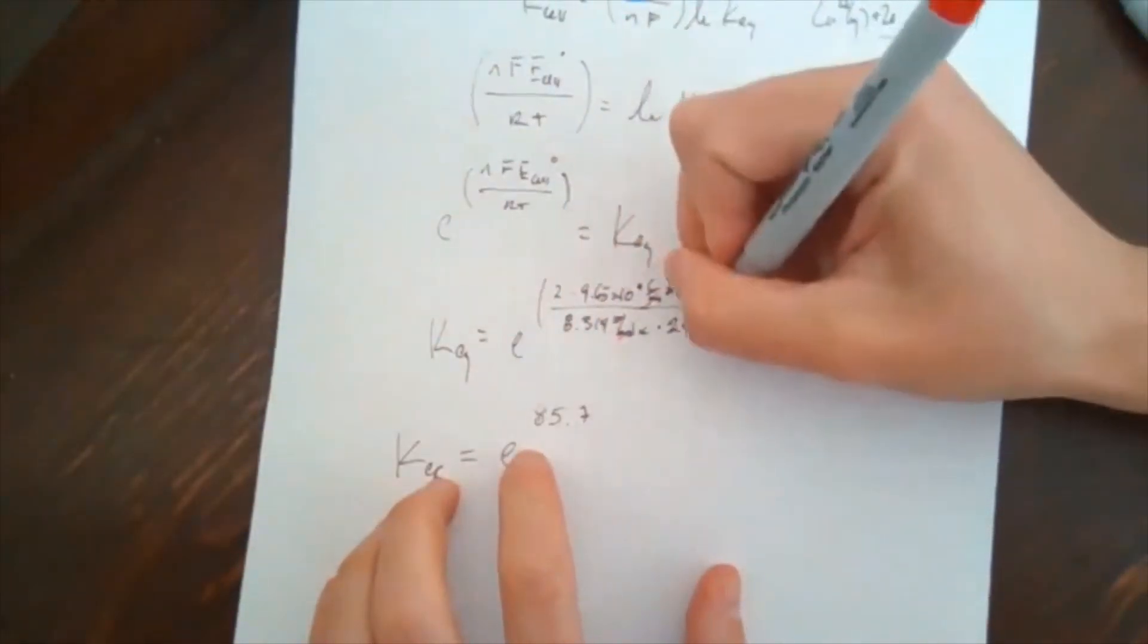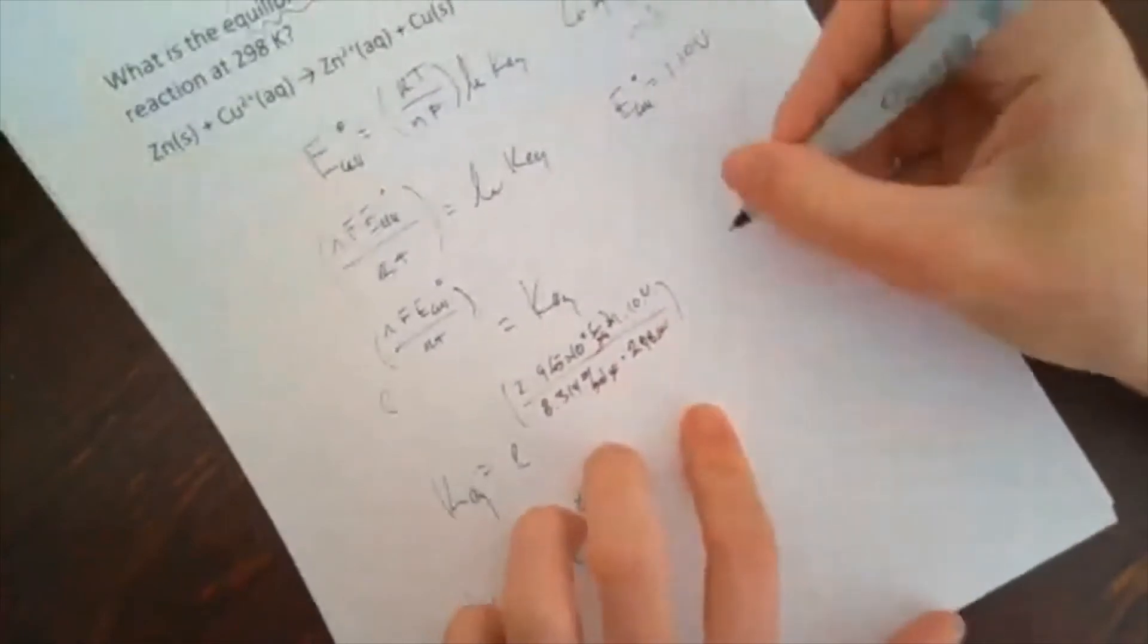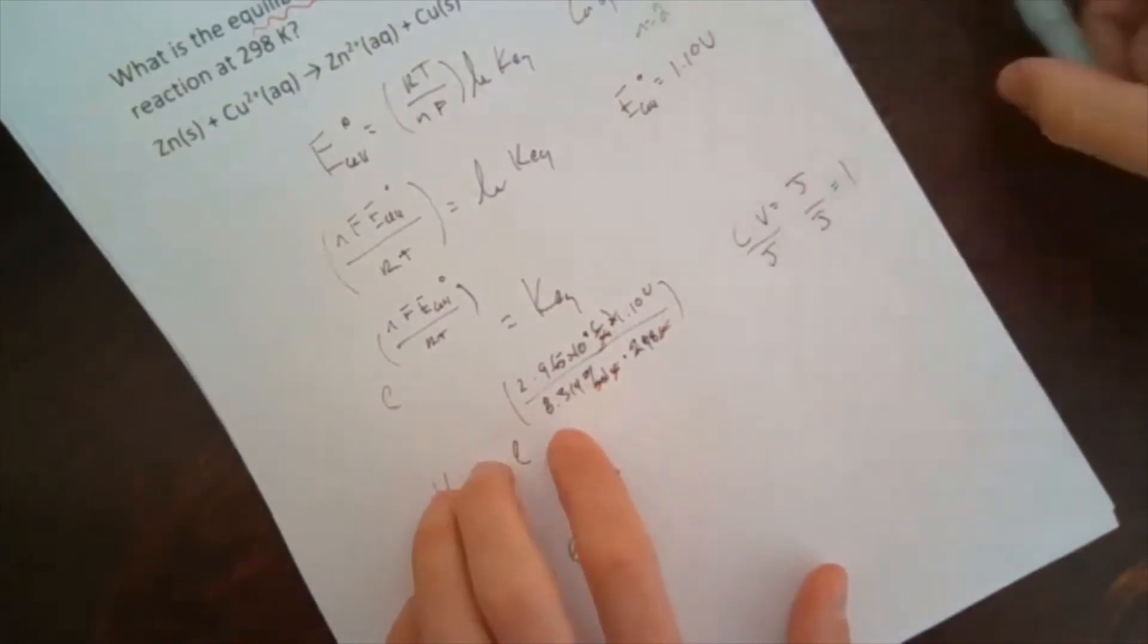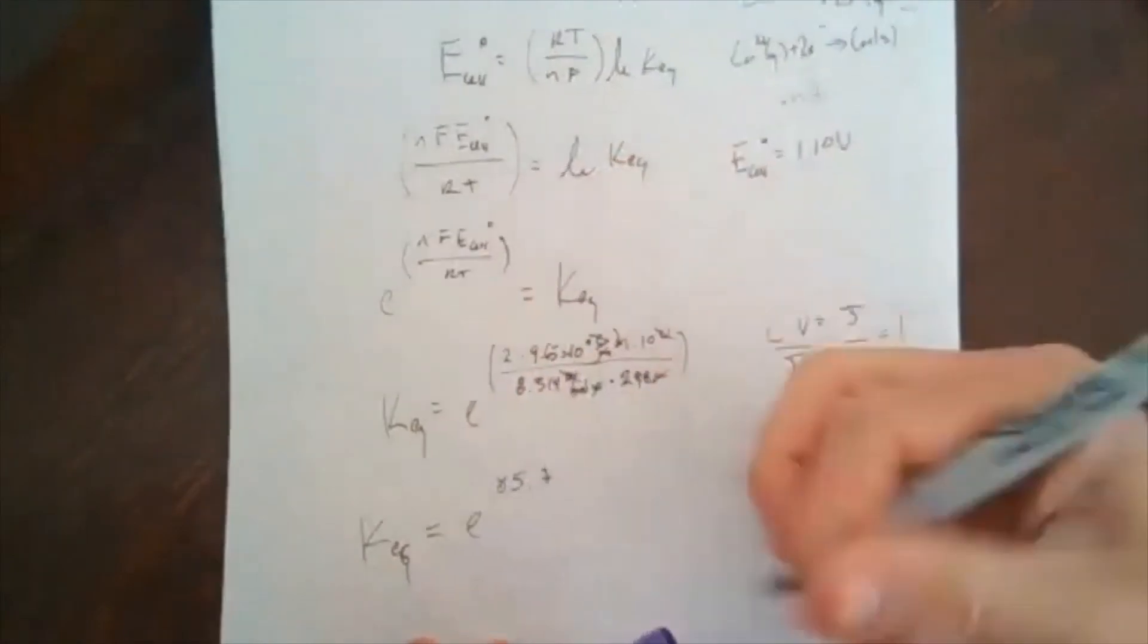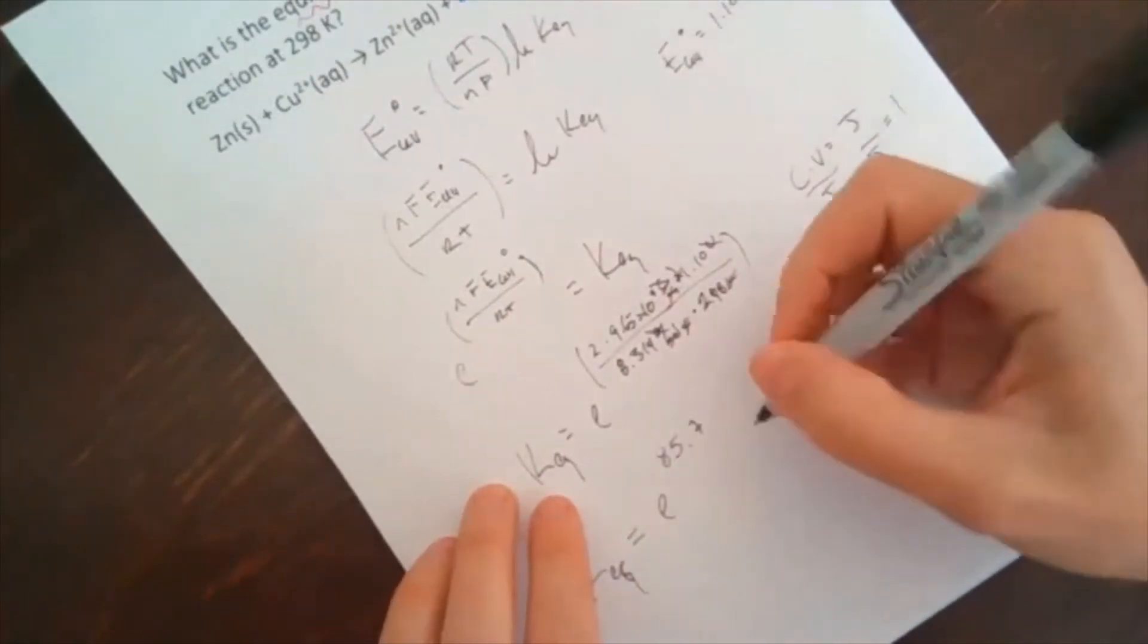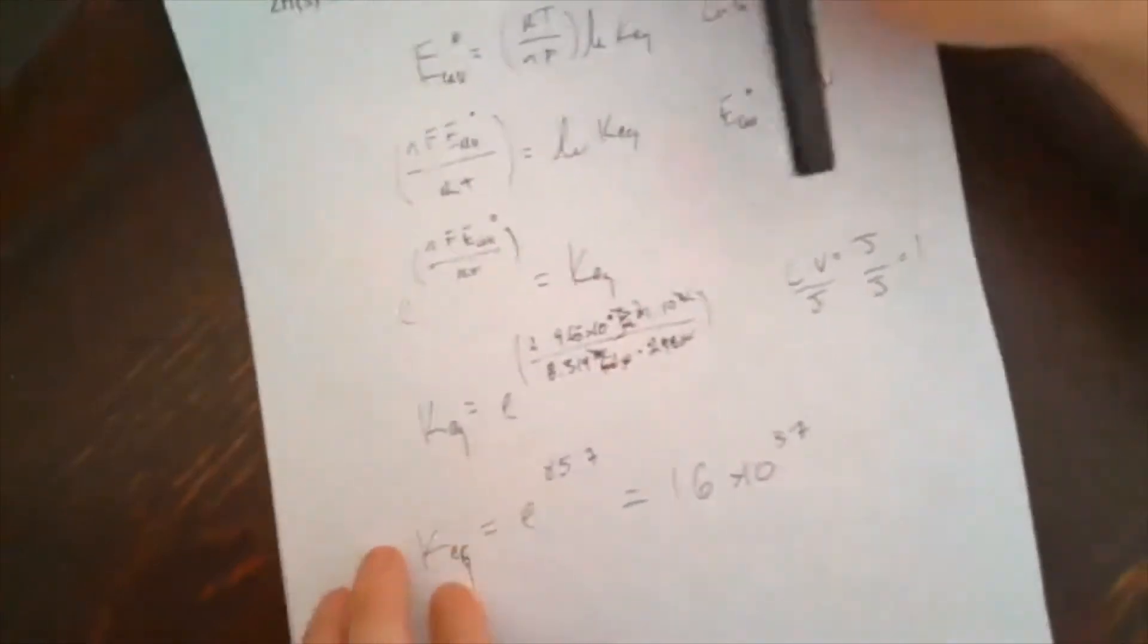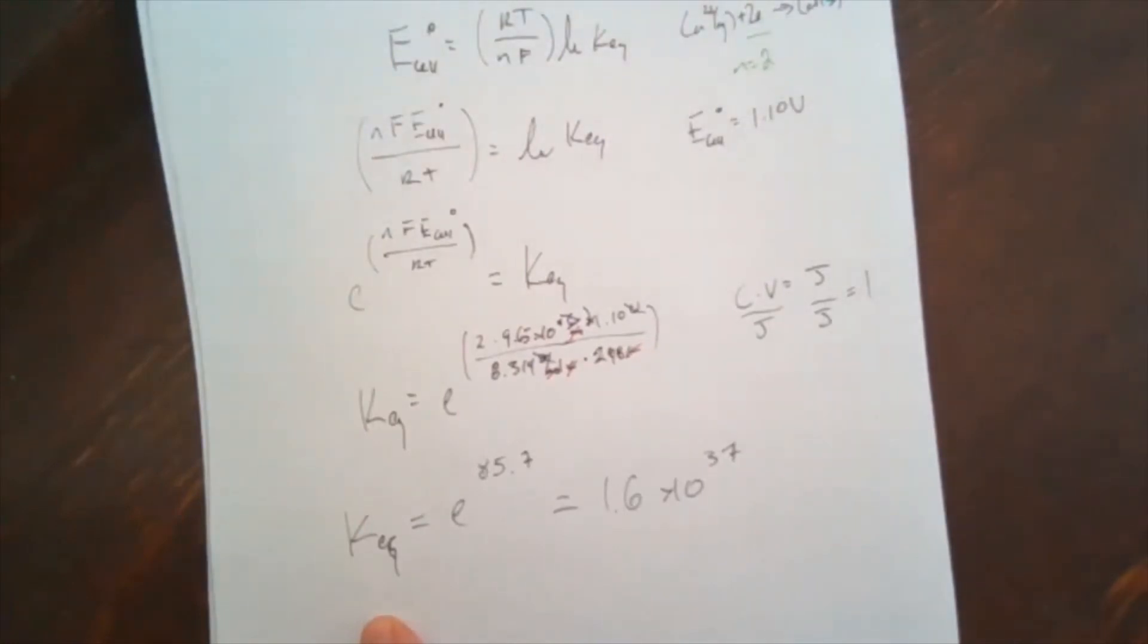And so if I evaluate that, I would get that equilibrium constant equal to e to the 85.7. So one of the things to note is if we look at these units, the per moles cancel out, the kelvin and the per kelvin cancel out. So then I have C times V divided by J. And so it ends up that coulombs times volts is just equal to joules, and so if I divide both sides by joules, I just get one. So we can see that these combine coulombs times volts cancels out the joules. So we end up with a unitless value. So if I actually take e to the 85.7 power, I get that the equilibrium constant is 1.6 times 10³⁷.